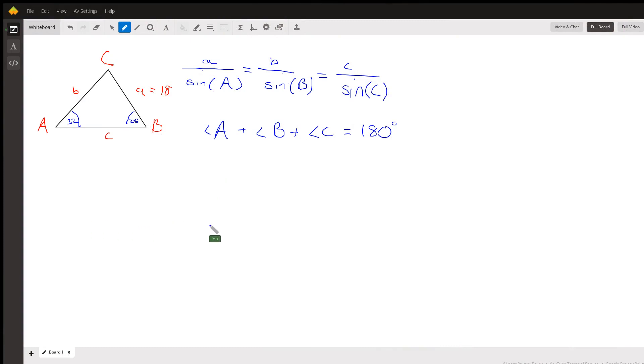Okay, so for this problem, they give you this triangle here, this triangle ABC, and they give you the two angle measures. For one measure, angle A is 32, and angle B is 25 degrees, and then they give you the side A equals 18. And you can notice the sides are across from the angles, right?